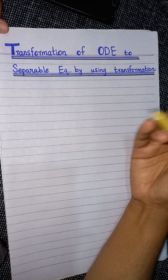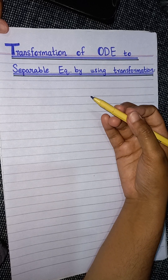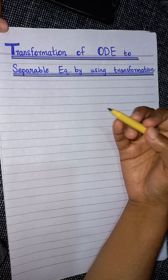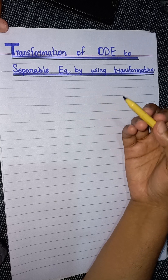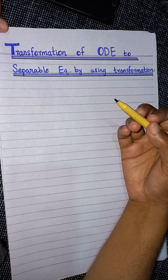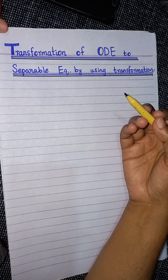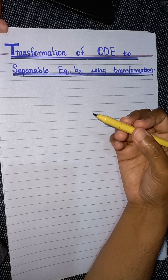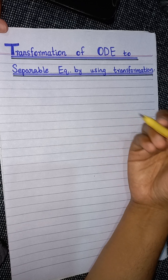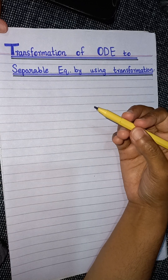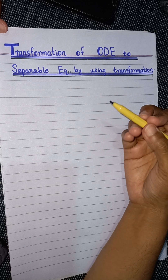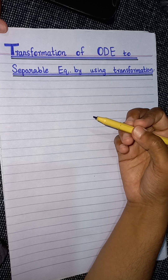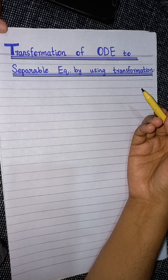In the previous lectures, I have told you that if you are given the infinitesimals ξ(x, y) and η(x, y), then you can find the transformation equation that will convert your given ordinary differential equation, no matter how difficult it is, into a separable equation that can be easily solved.